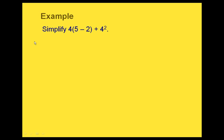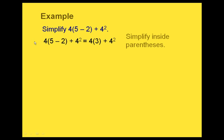Here's an example. If we want to simplify this expression, we have 4 times the quantity (5 minus 2) plus 4 squared. If we look through and pick out the first thing in our order of operations, we have a set of parentheses, so we would work inside of those first. Our first step is to simplify inside the parentheses, going from 5 minus 2 to 3.